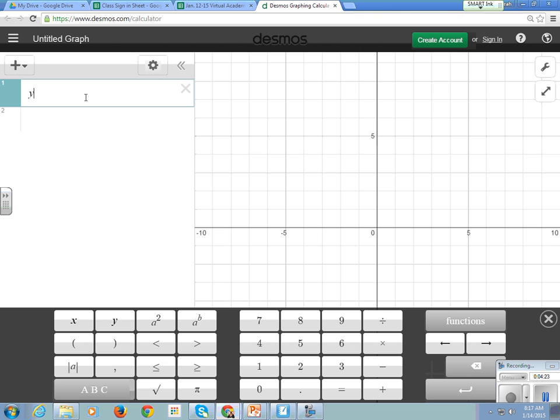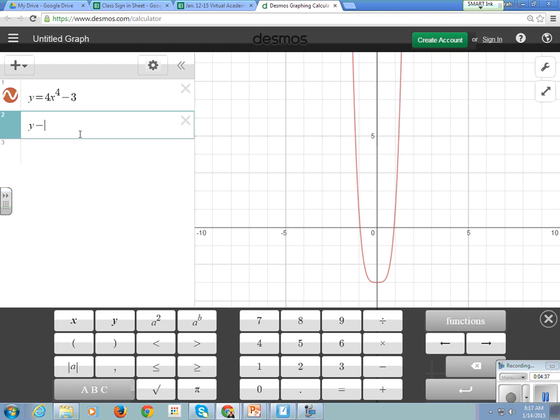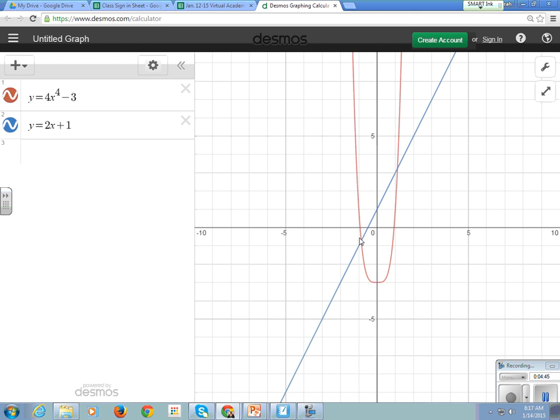So, you put the left-hand side into the equation. So, y equals 4x to the fourth, what's the next part, minus 3, and y equals 2x plus 1. So, in this scenario, with Desmos, you just want to click where the two equations intersect because where they are equal is the solution to our equation.